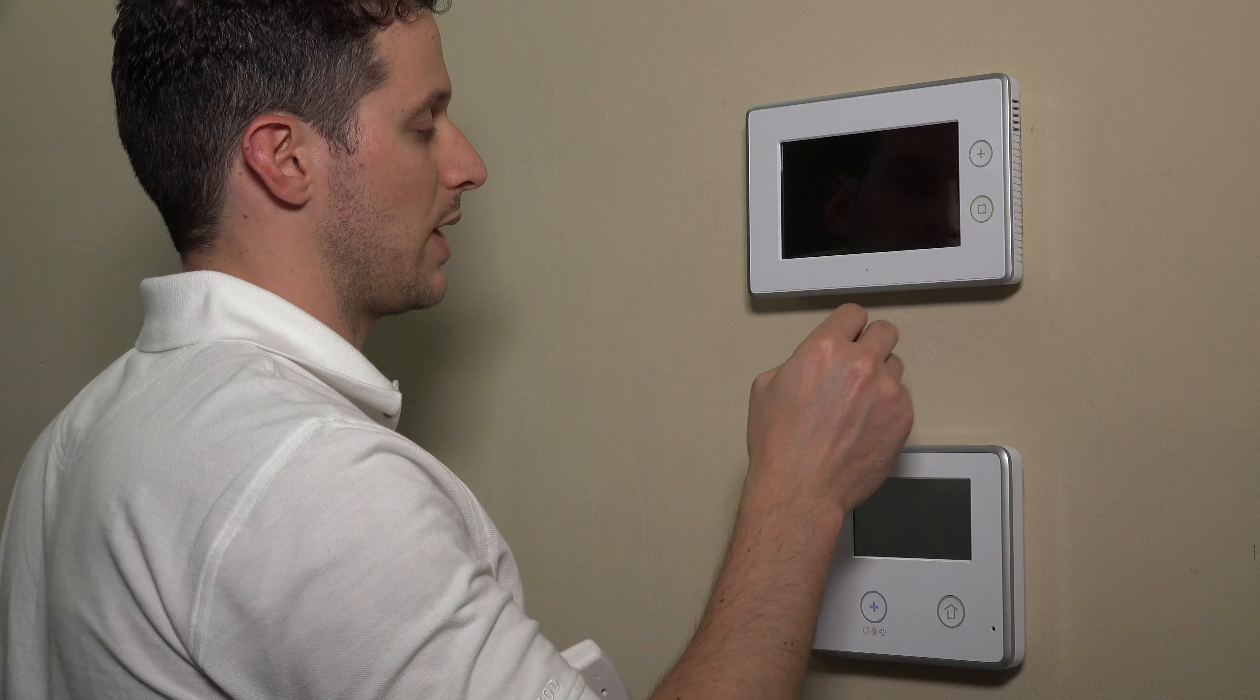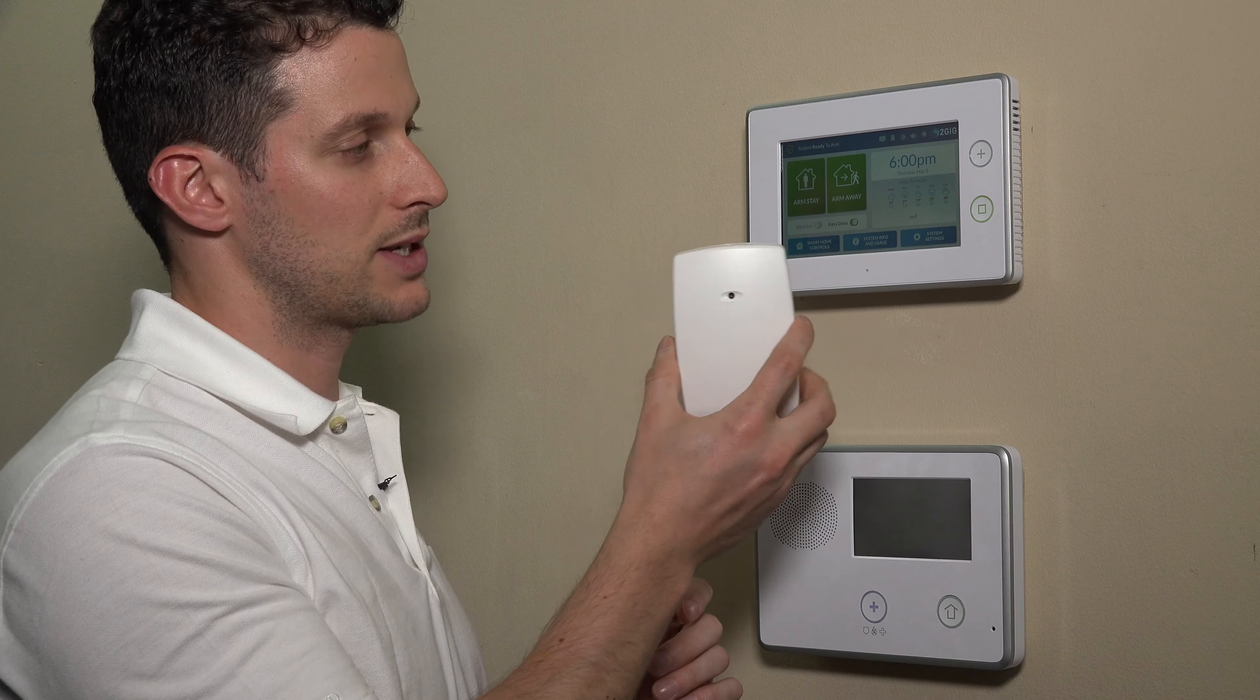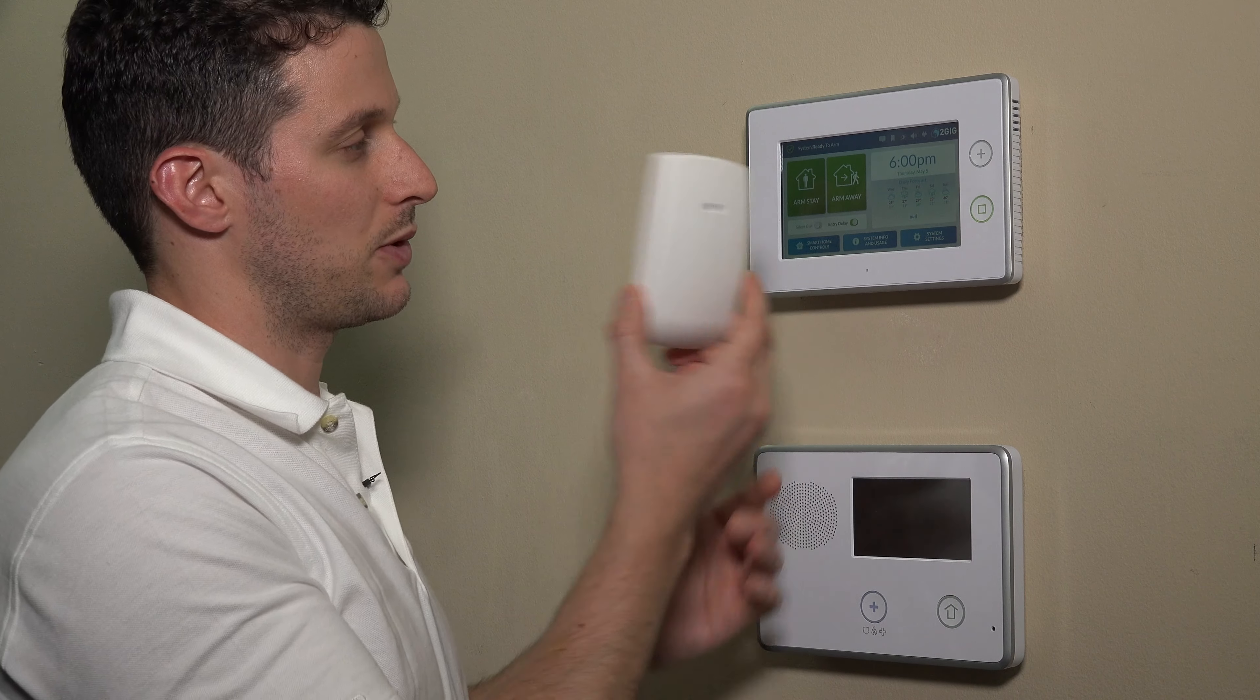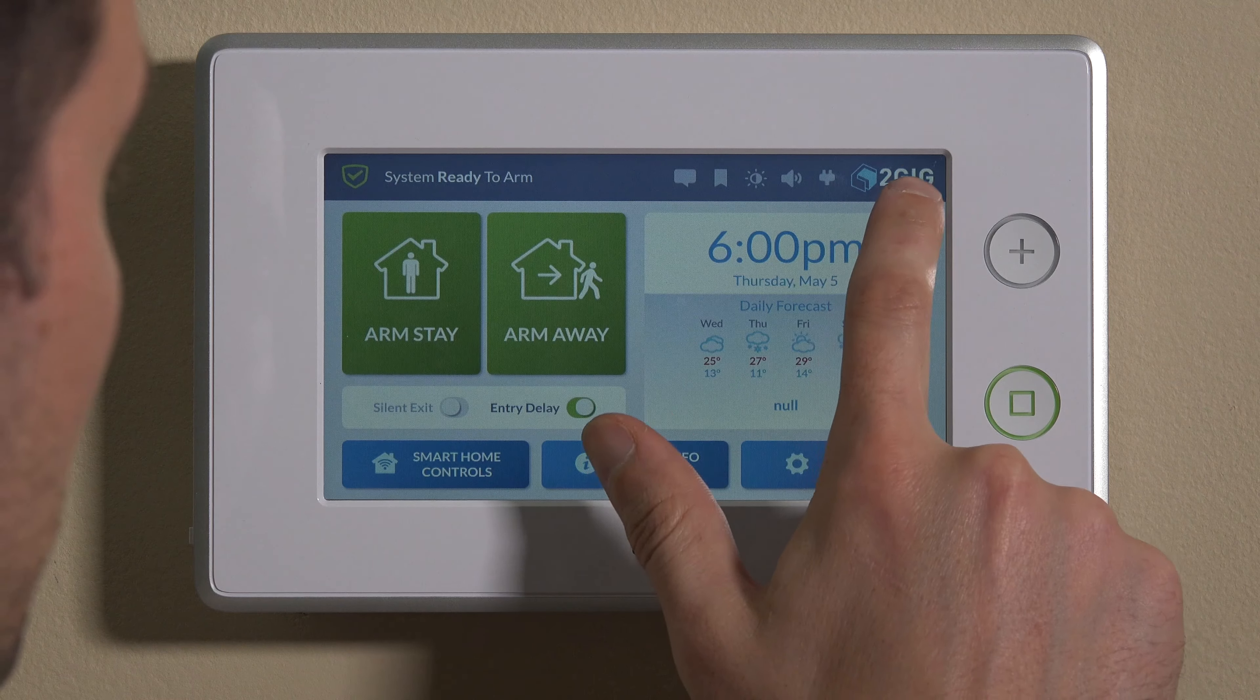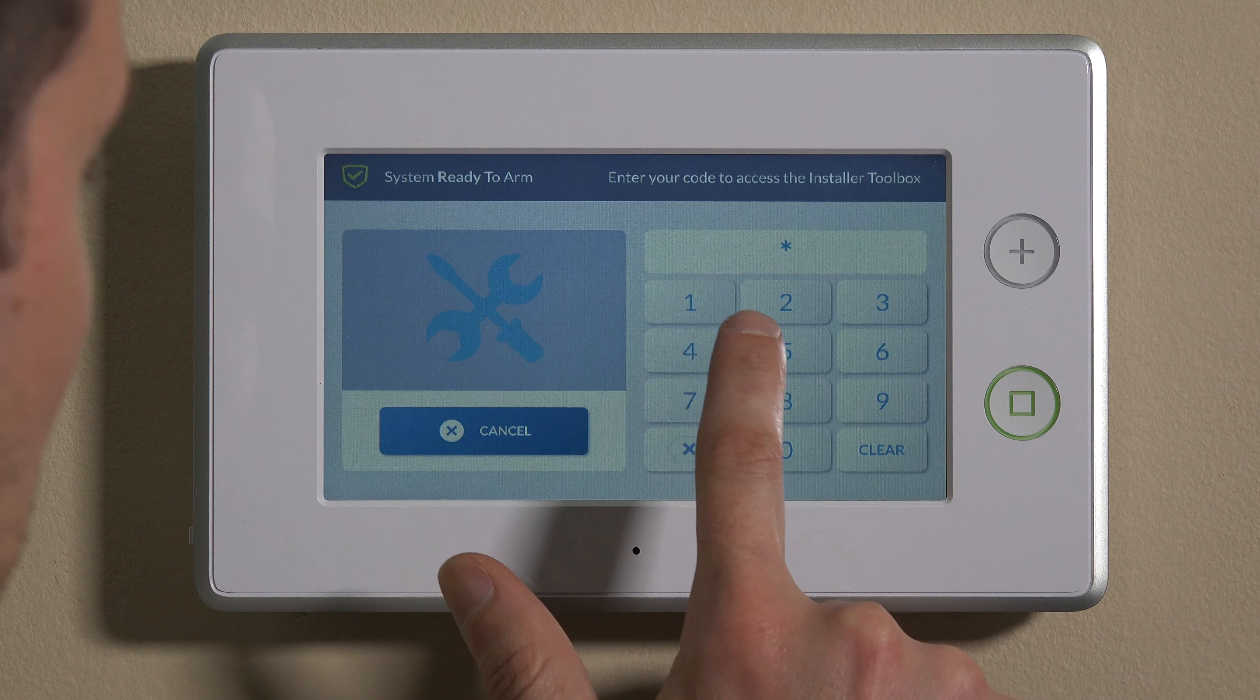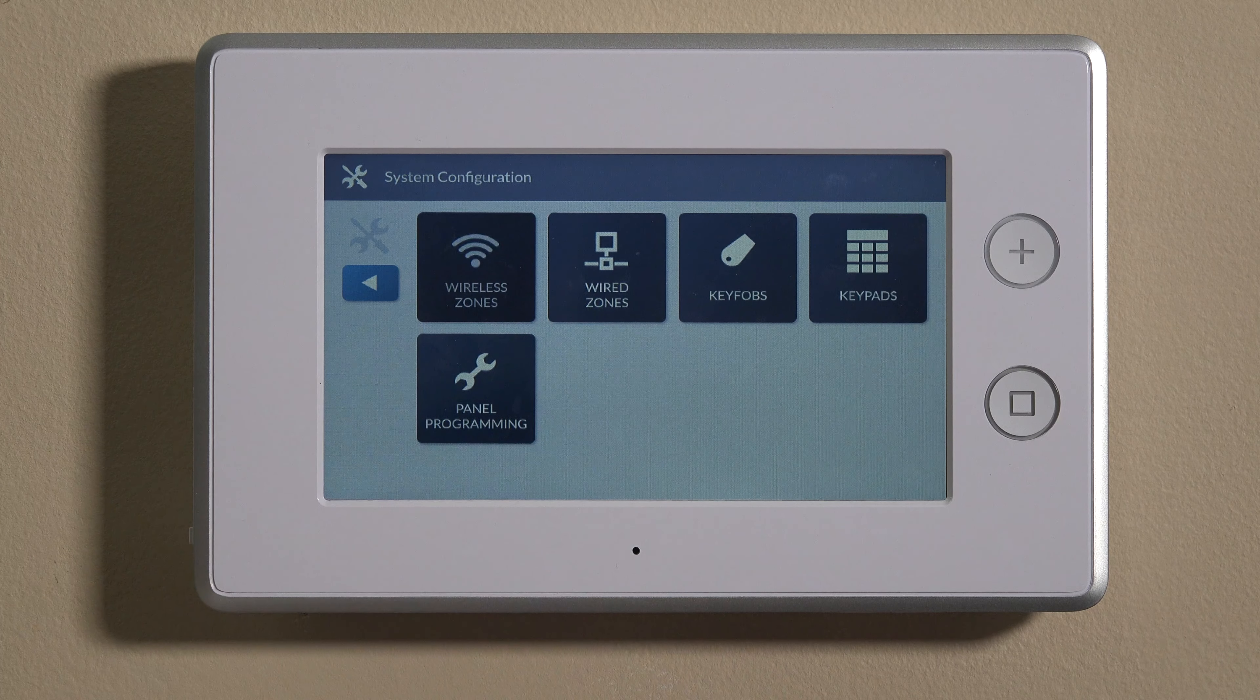Put our screwdriver down and we have our sensor here. We're going to pop into programming. For today we'll actually manually enter in, but just like any other wireless device, you can use the tamper switch to auto enroll. The assumption is that we've already mounted this on the wall or we've already pulled the battery and closed it up. So we'll hit the 2GIG symbol on the top right and then enter our installer code. The default installer code for the GC3 is 1561. If you've changed that code already, then just use that code. So we'll use 1561, go into system configuration, wireless zones.